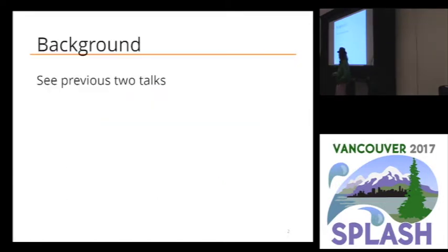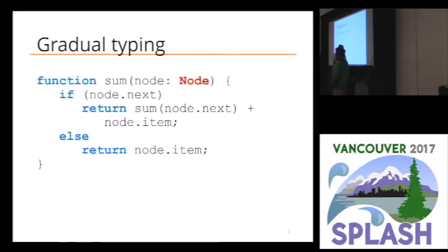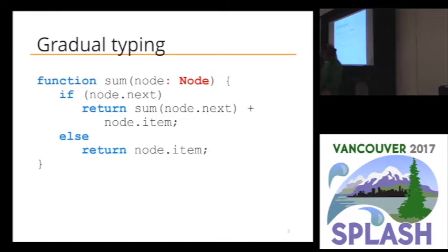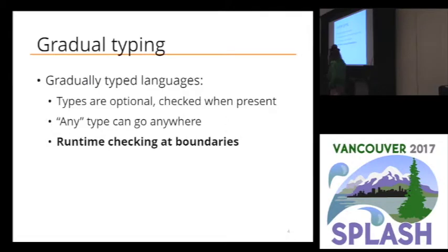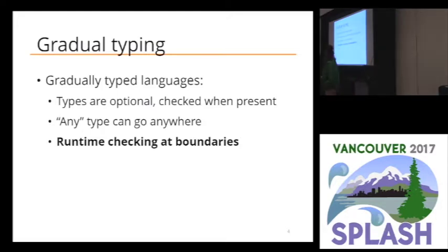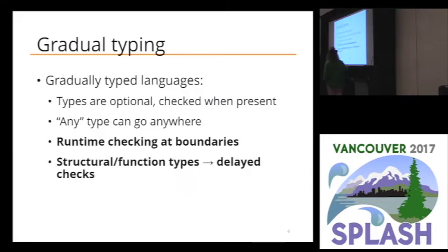So here's the background. You just sat through two talks on gradual typing. What's gradual typing? We have a program — in this case I'm writing it in JavaScript, because somehow I ended up in that hell. It might be in TypeScript, so you can add a type annotation optionally. The problem with gradual typing: we want types to be checked when they're present. We want them checked at runtime at the boundaries between typed and untyped code.